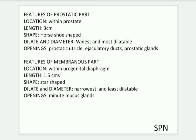Features of the membranous part: its location is within the urogenital diaphragm, its length is about 1.5 centimeters, its shape is star-shaped when dilated, and its diameter is the narrowest and least dilatable. The openings are minute mucous glands.